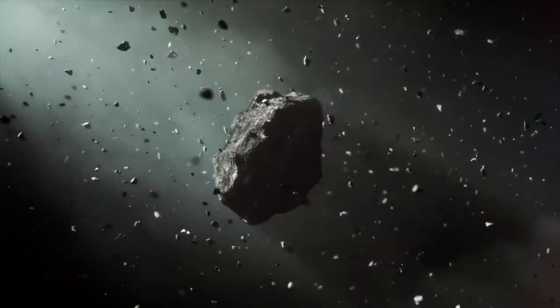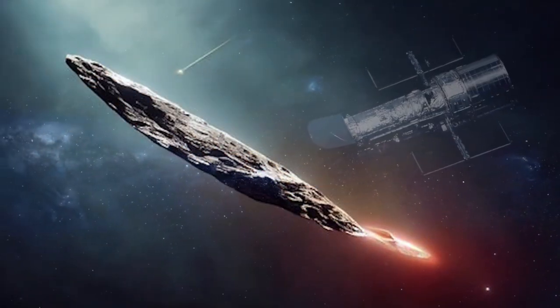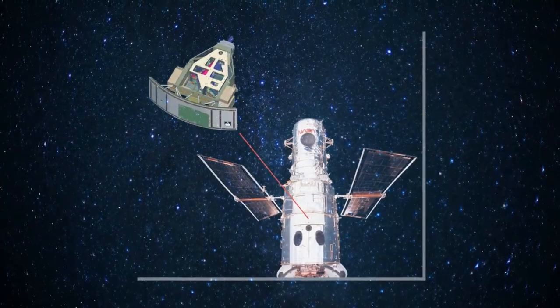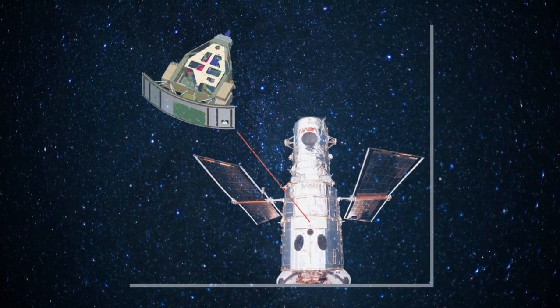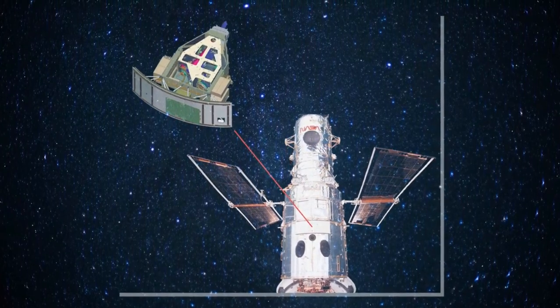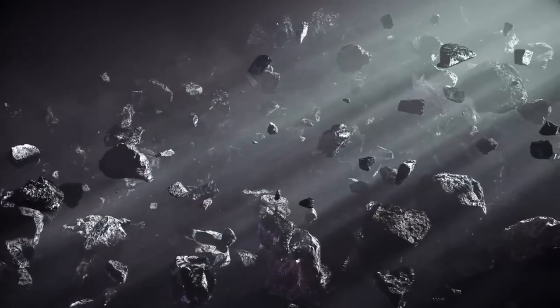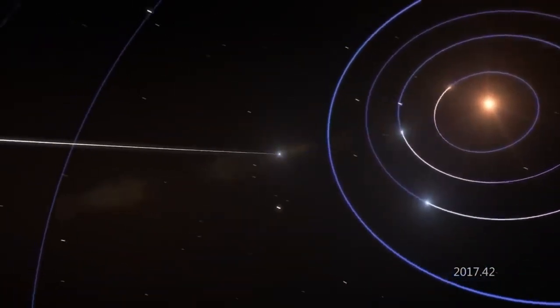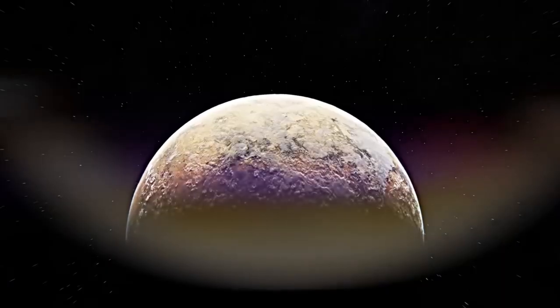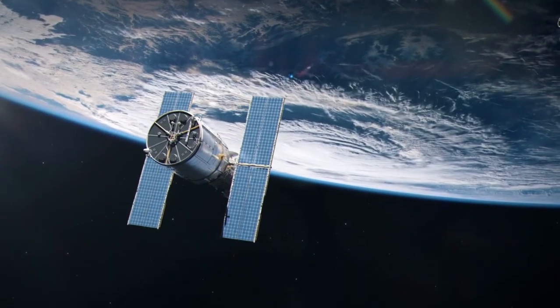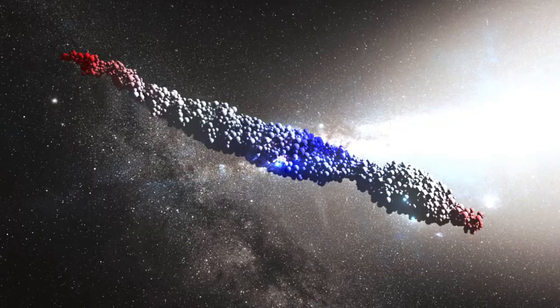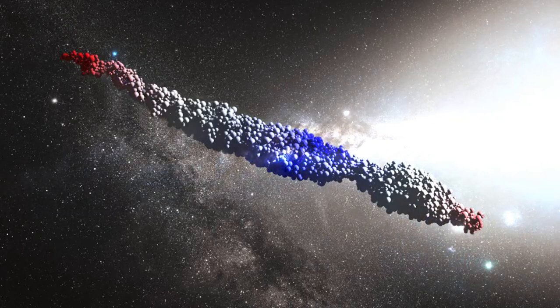'Oumuamua's extraordinary outlier status places it in a class of its own. Standing out among billions of celestial entities in our galaxy alone, it challenges our understanding of how celestial bodies form, evolve and journey across the cosmos. Contrary to what one might expect, this massive space cigar was hurtling through the solar system at a mind-boggling pace of 85,700 miles per hour. Talk about cosmic speed limits being shattered. Its velocity wasn't a steady cruise. Oh no, it fluctuated throughout its journey, adding to the enigmatic nature of this interstellar object.